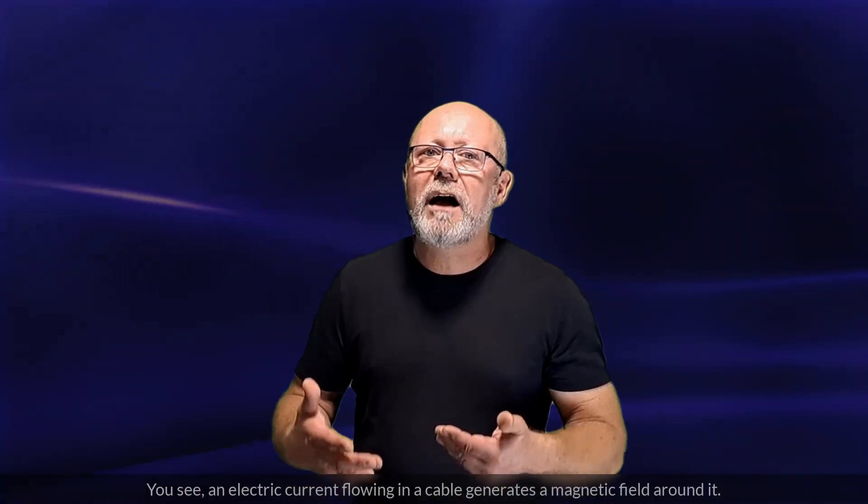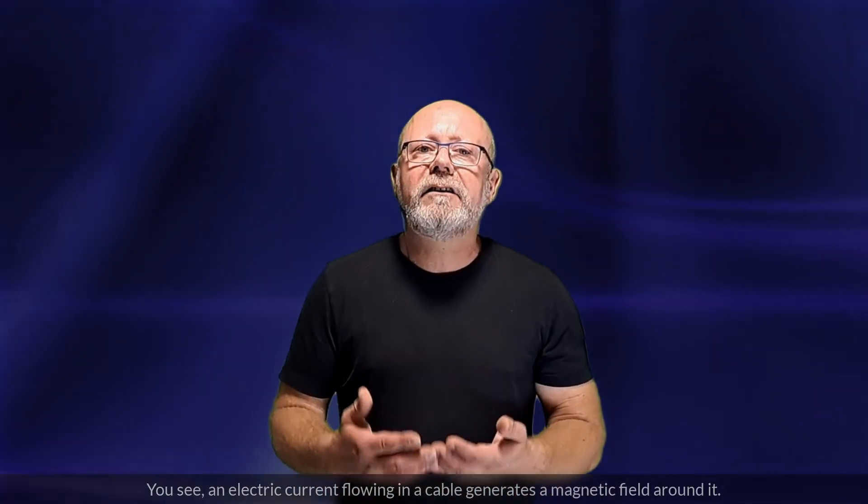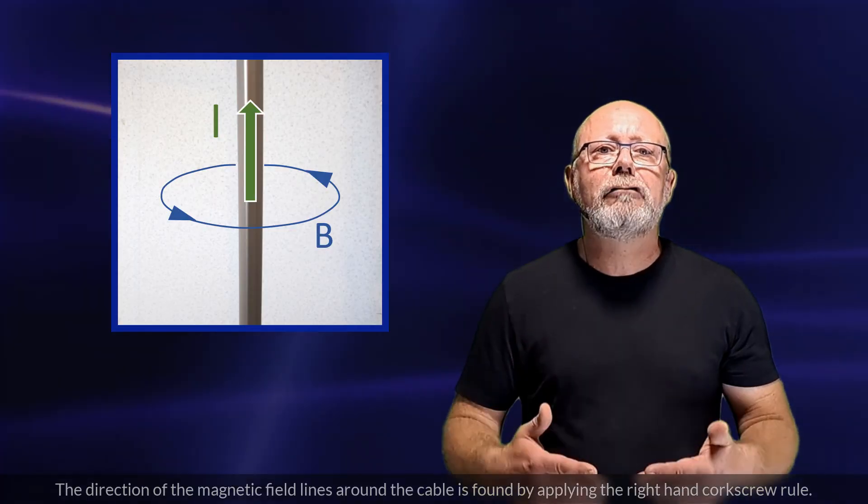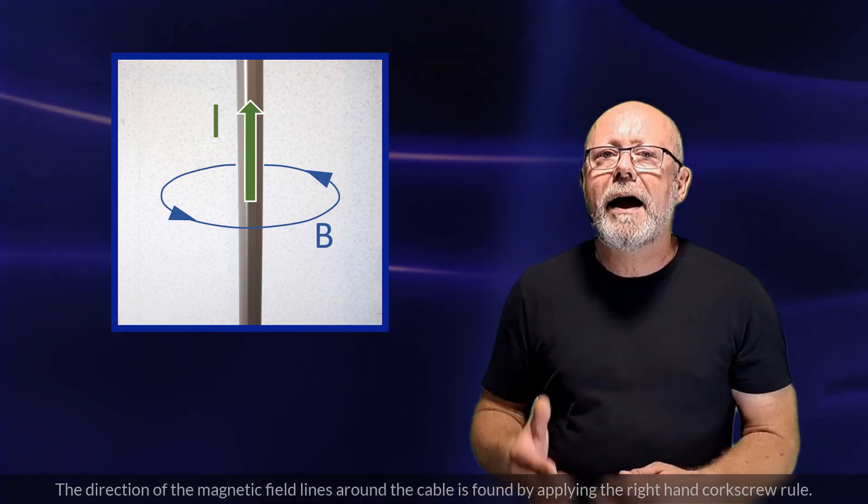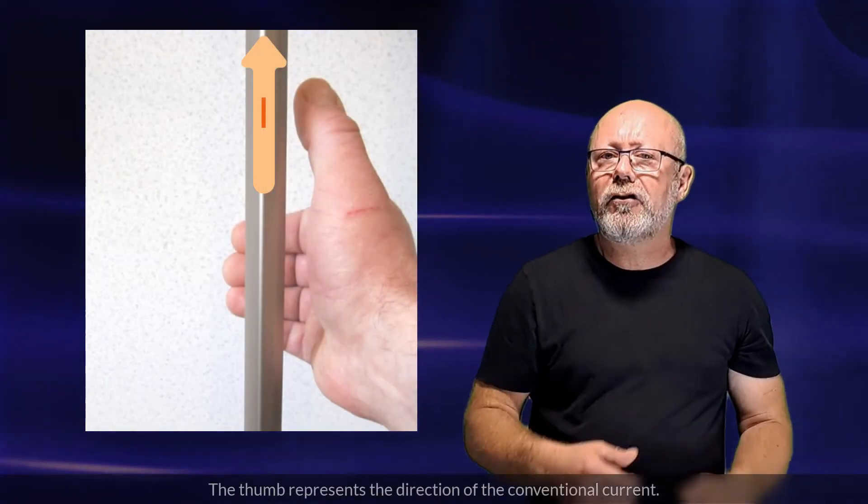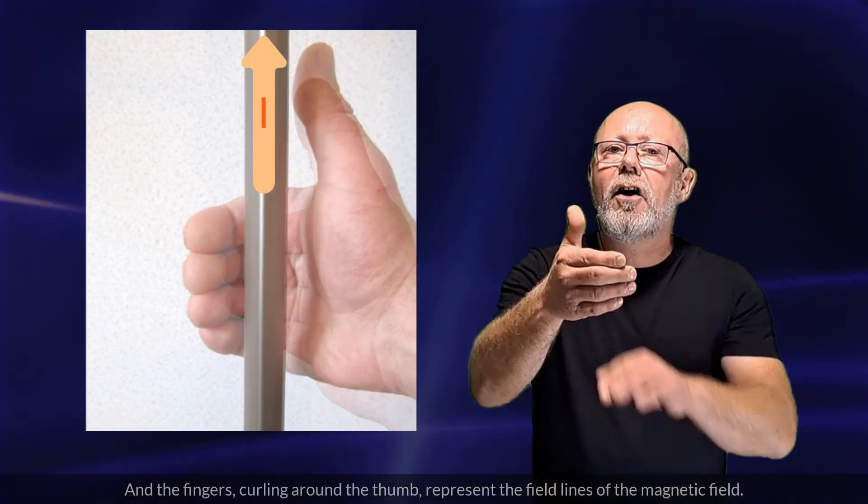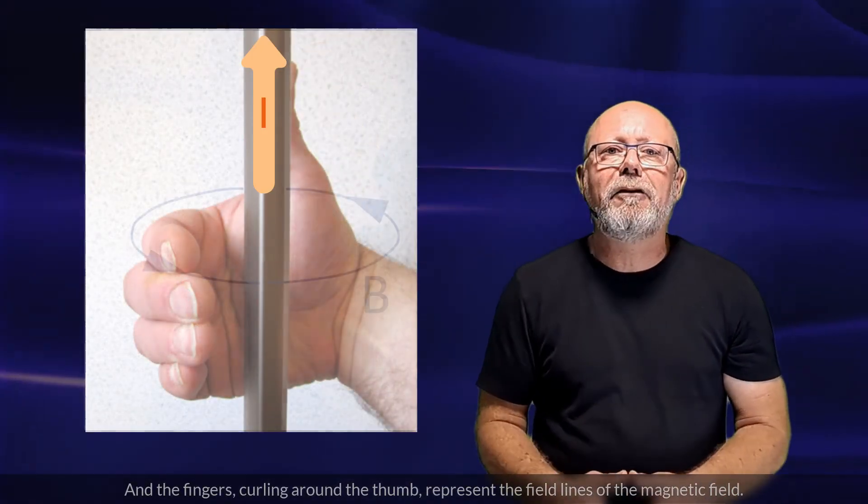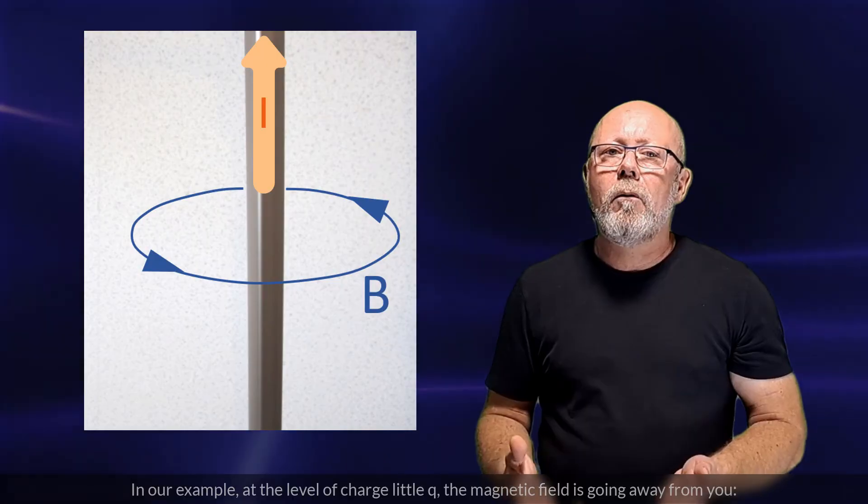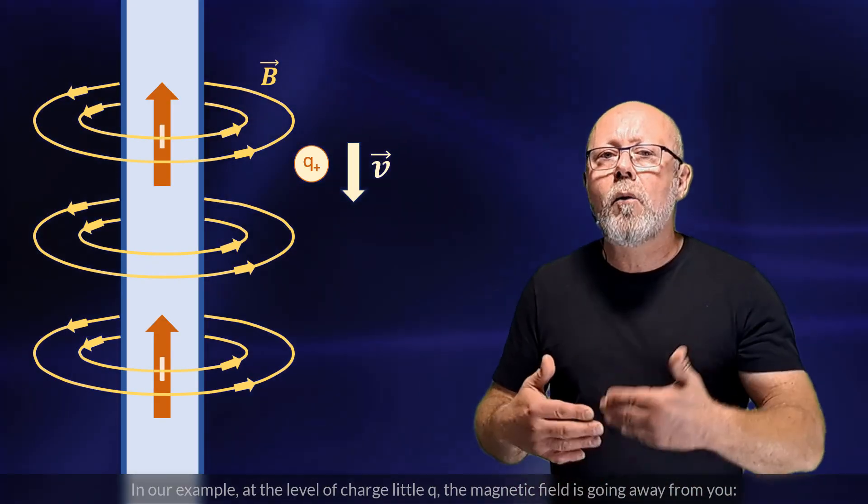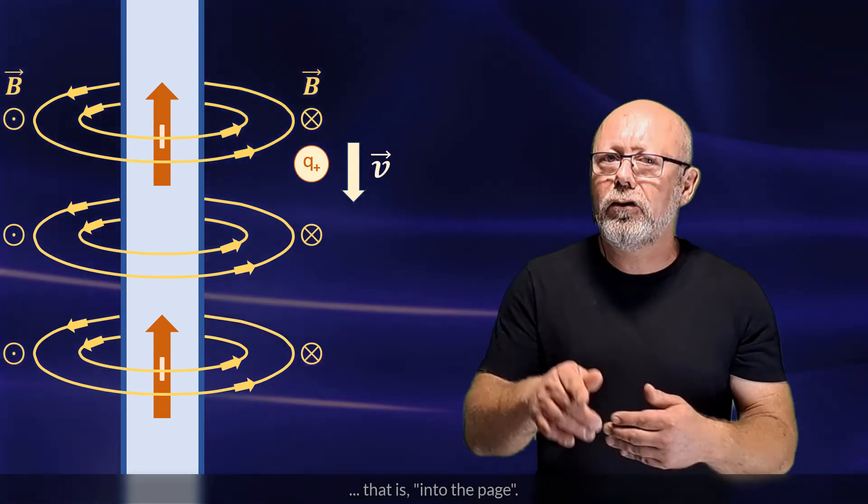You see, an electric current flowing in a cable generates a magnetic field around it. The direction of the magnetic field lines around the cable is found by applying the right-hand corkscrew rule. The thumb represents the direction of the conventional current. And the fingers curling around the thumb represents the field lines of the magnetic field. In our example, at the level of charge little q, the magnetic field is going away from you. That is, into the page.